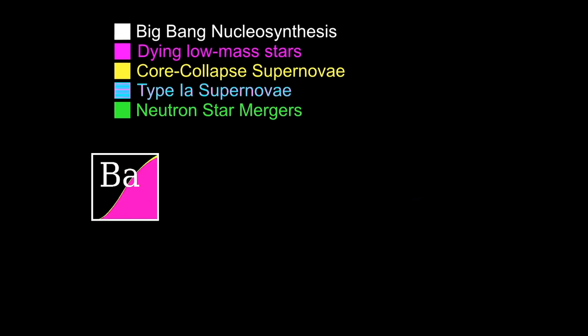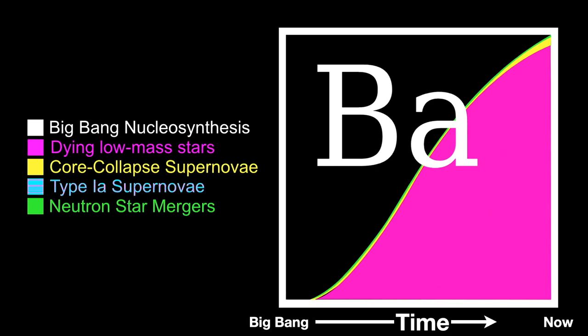The horizontal axis of this square represents time from the Big Bang until now; the vertical axis shows the proportion of barium created by various processes. The vast majority of barium present today is believed to be produced by dying low-mass stars — that's the magenta area. A tiny amount is produced in supernovae — the yellow area — and a very small proportion in neutron star mergers — that green sliver on top. The magenta area doesn't get started until later in the universe's history because low-mass stars exhaust their nuclear fuel much more slowly and last a long time before dying.